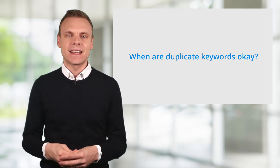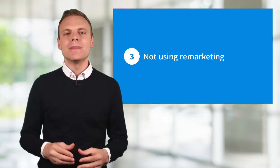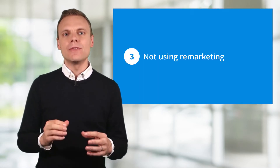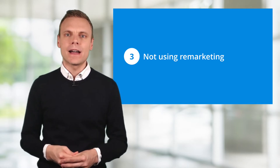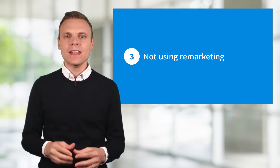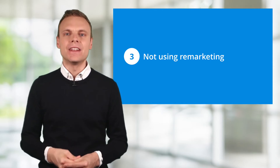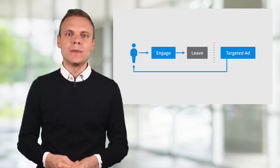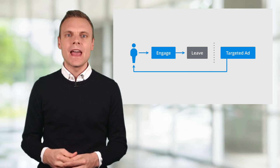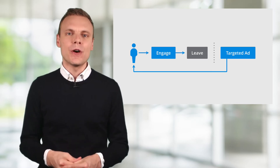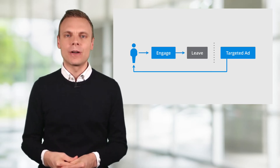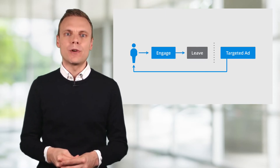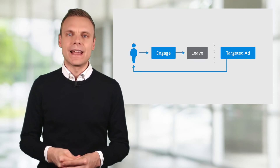Mistake number 3 is not using remarketing. Even if you're not running display campaigns, it's important to set up remarketing audience lists for people who've been to your website. This allows you to target your ads and adjust your bids. For example, using remarketing with your search campaigns allows you to increase your bids if someone has been to your website but hasn't converted yet, boosting visibility for competitive keywords. Remarketing is also the perfect way to start advertising on the Google Display Network by targeting people who've already engaged with your website and brand, making conversions more likely.